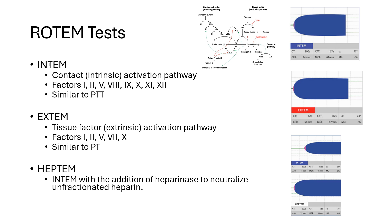The next test is Extem — this is a tissue factor activation pathway. It provides information on coagulation kinetics for factors 1, 2, 5, 7, and 10, similar to PT. We also have a Heptem test, which combines Intem with heparinase to neutralize any unfractionated heparin, either exogenous or endogenous. By comparing Intem to Heptem, we can determine heparin's effects. This has been validated for patients on cardiopulmonary bypass with heparin exposure.